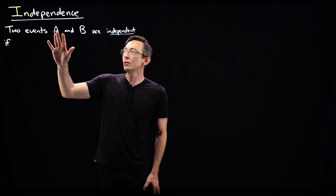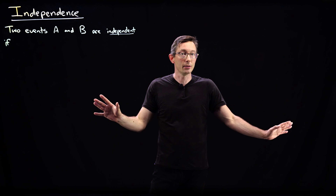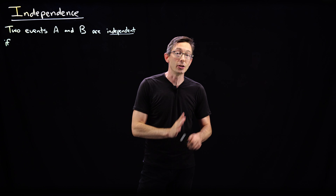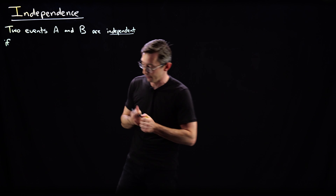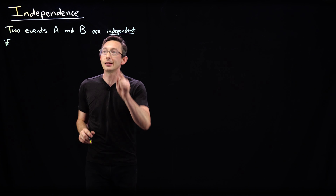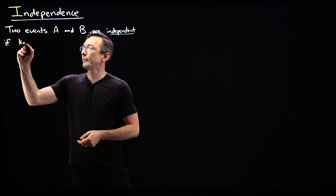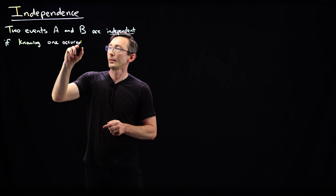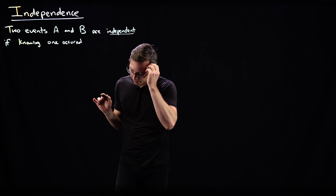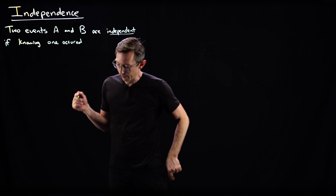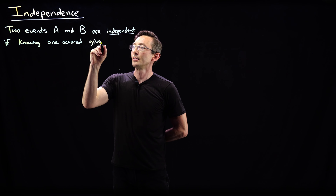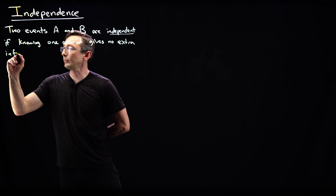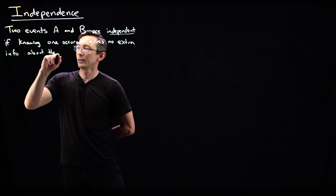We say that two events A and B are independent of each other if having information about one of them doesn't change the probability of the other one happening. Two events A and B are independent if knowing that one of them occurred gives no extra information about the other.